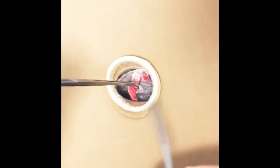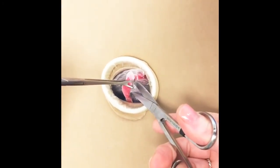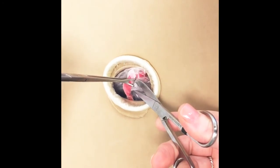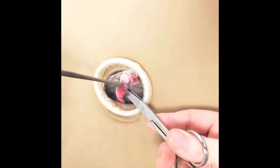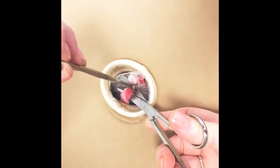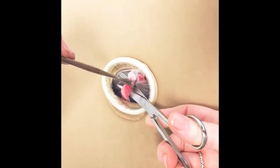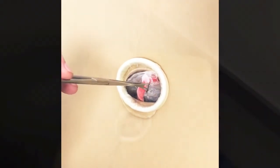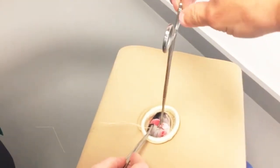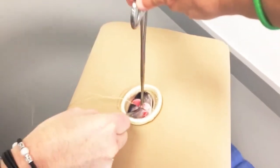Babcocks are then used to walk the tube back to an appropriate location for ligation. Of note, both the modified Pomeroy or Parkland method of ligation can be used with this model. In fact, we typically ask our interns to perform the modified Pomeroy on one side and the Parkland method on the other side.